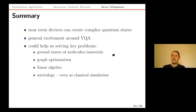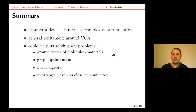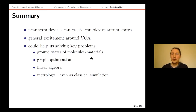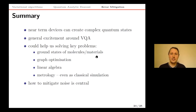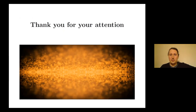In summary, we already have quantum devices that can create very complex quantum states. There is great excitement about variational quantum algorithms because they can in principle help solve very important problems such as finding ground states, QAOA for graph optimization, and possible applications in metrology. Still, many crucial problems need to be addressed — most pressingly, how to mitigate the noise in these quantum circuits.